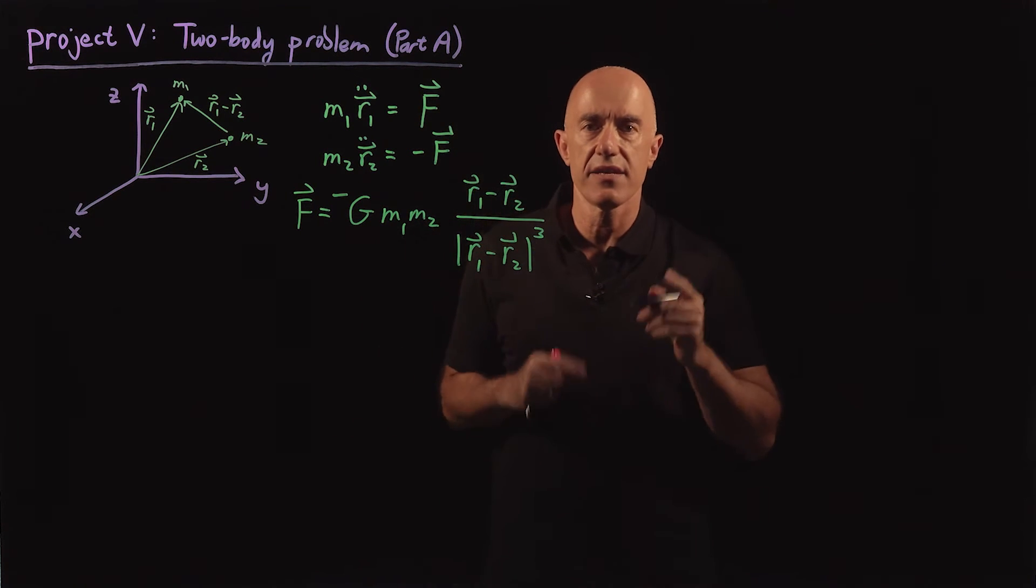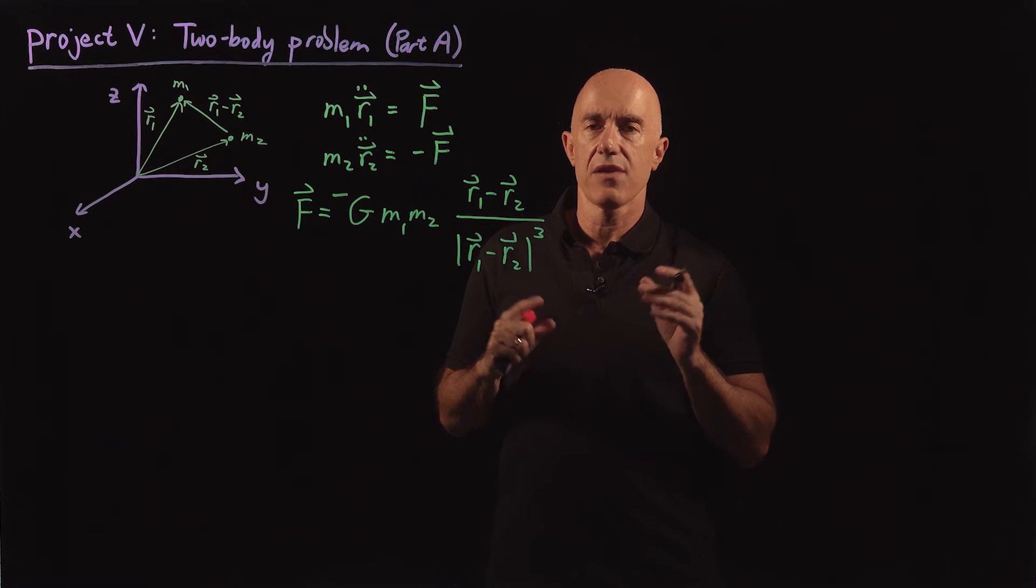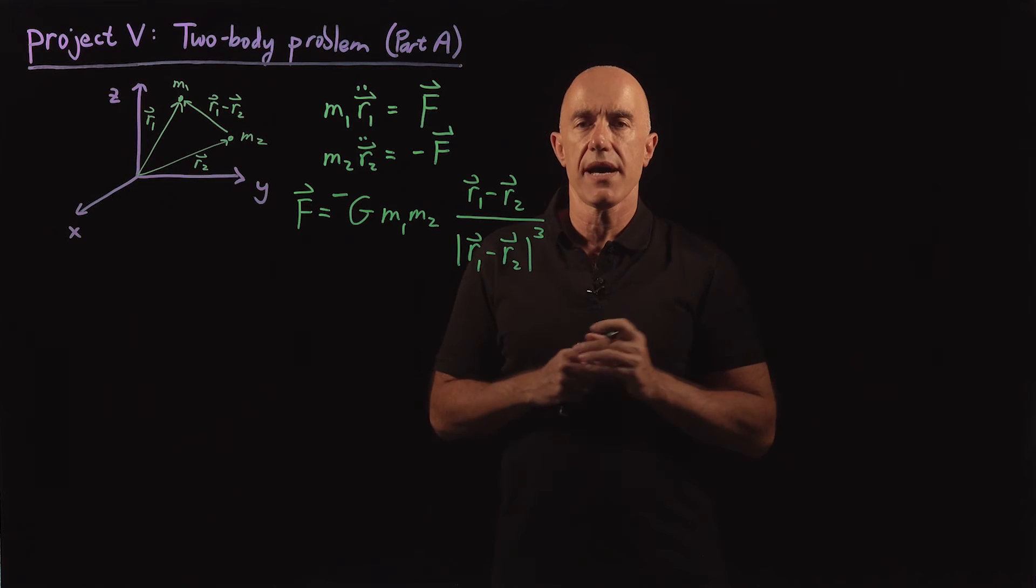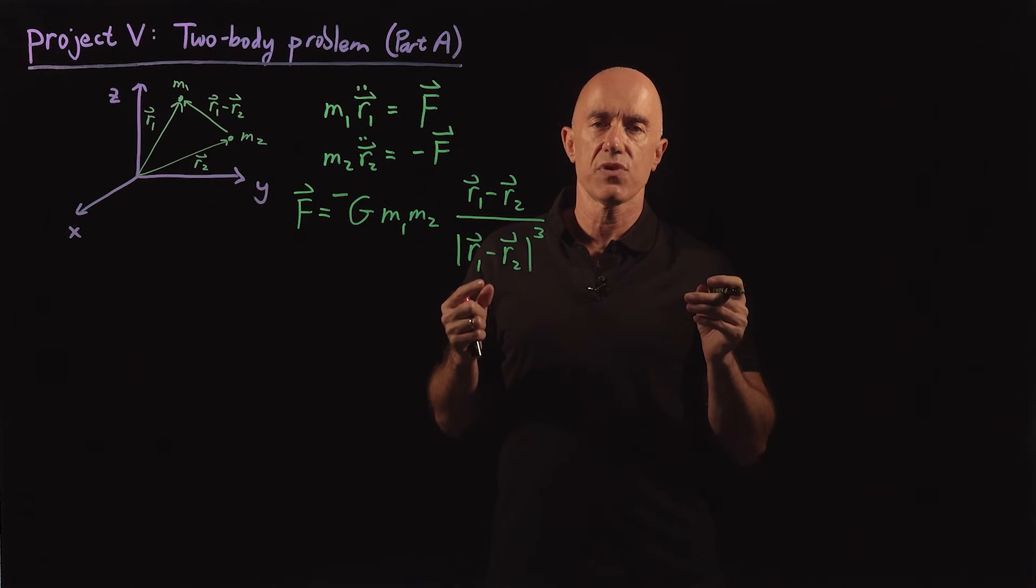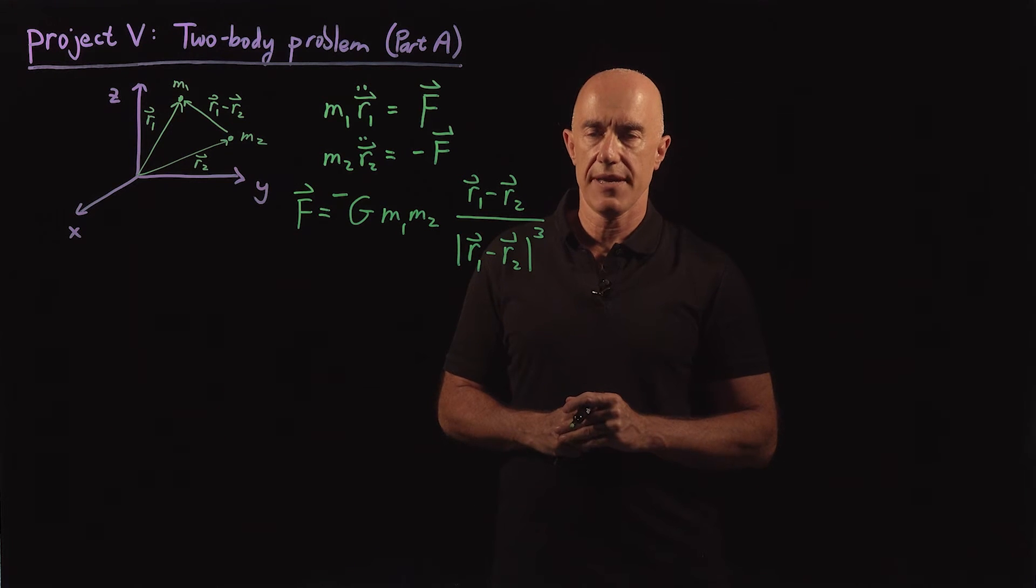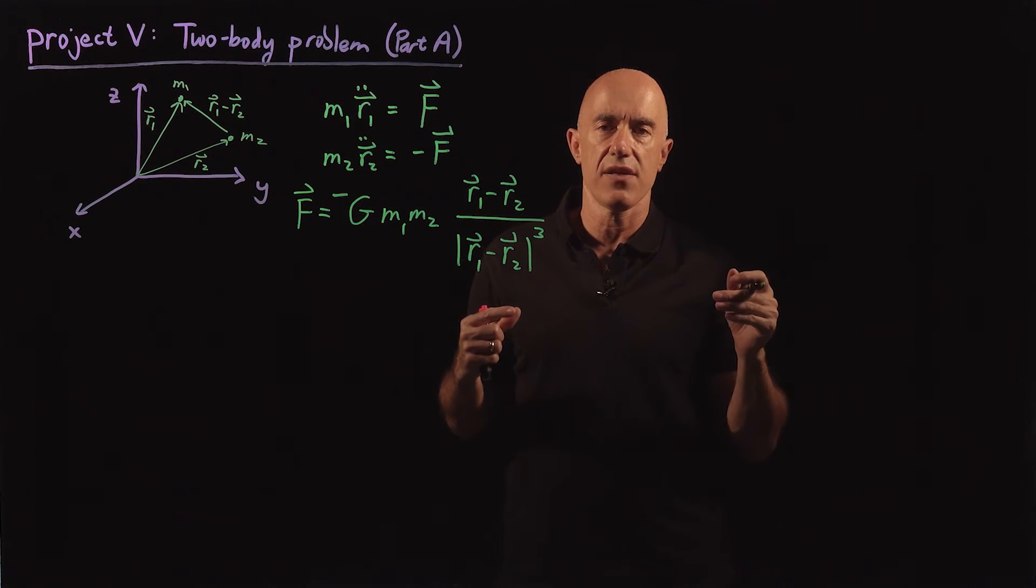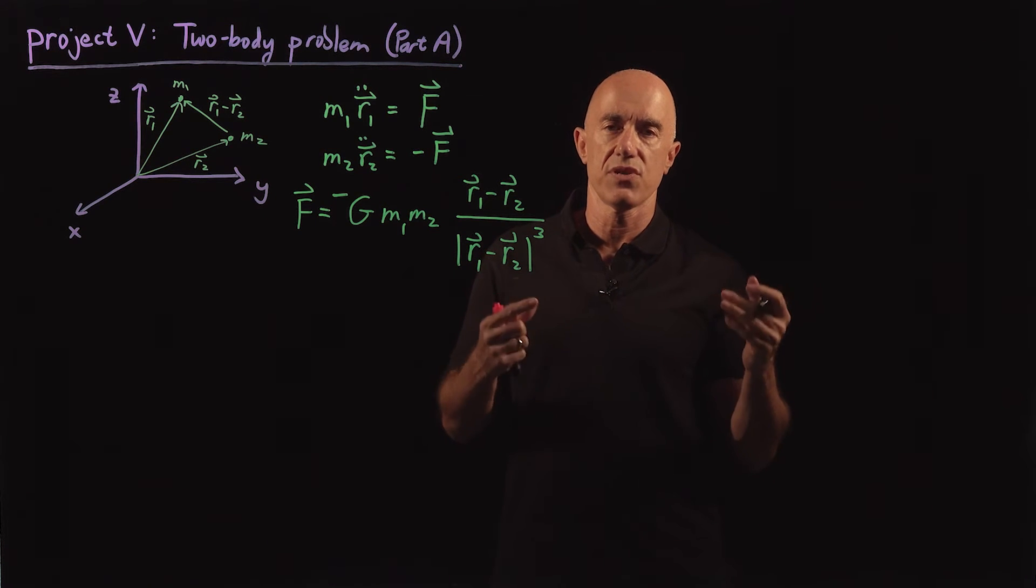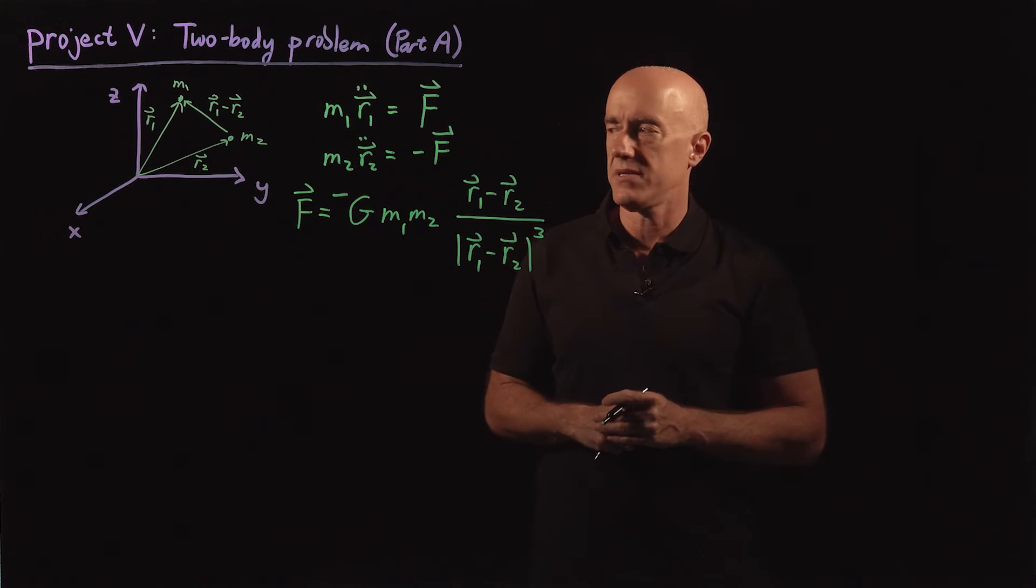But it turns out, and it's well known, that you can reduce the two-body problem to a one-body problem if you use what's called the center of mass coordinate system. So let me define here then the center of mass coordinate system and show you what the resulting one-body problem is.